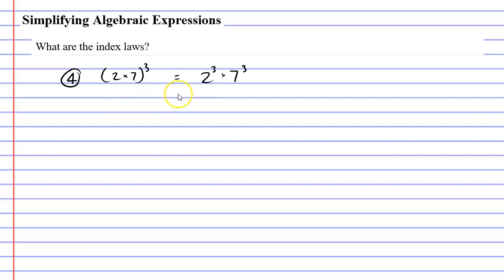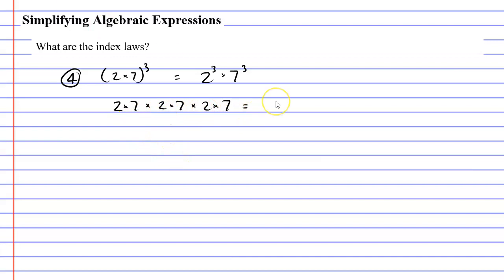So why is it that we're allowed to do this? Well, let's look at what's inside the brackets. We've got 2 times 7, and I'm putting 2 times 7 to the power of 3, which means I need to perform this operation 3 times: 2 times 7, times 2 times 7, times 2 times 7. And when you look at that, you can see that we have three 2s and three 7s. So we can rewrite it as 2 to the power of 3 times 7 to the power of 3.